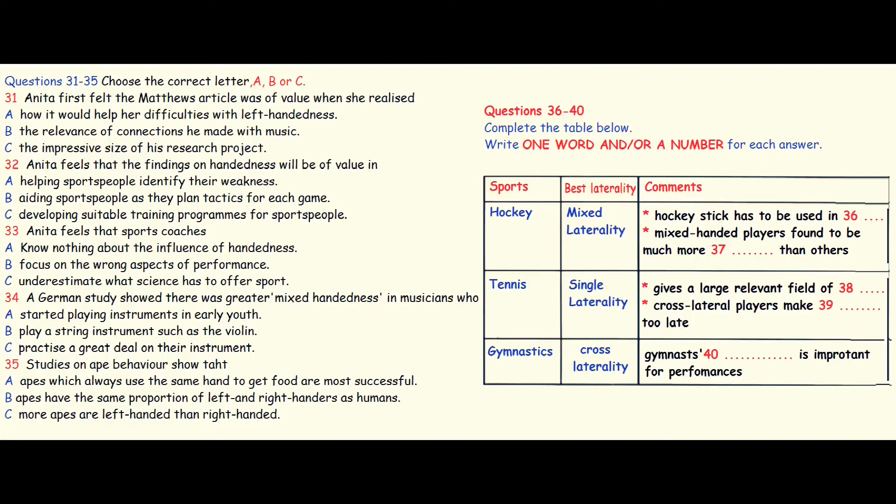I think Matthews' findings will be beneficial, not so much in helping sports people to work on their weaker side, but more that they can help them identify the most suitable strategies to use in a given game. Although most trainers know how important handedness is, at present they are rather reluctant to make use of the insights scientists like Matthews can give, which I think is rather short-sighted, because focusing on individual flexibility is only part of the story. Anyway, back to the article.